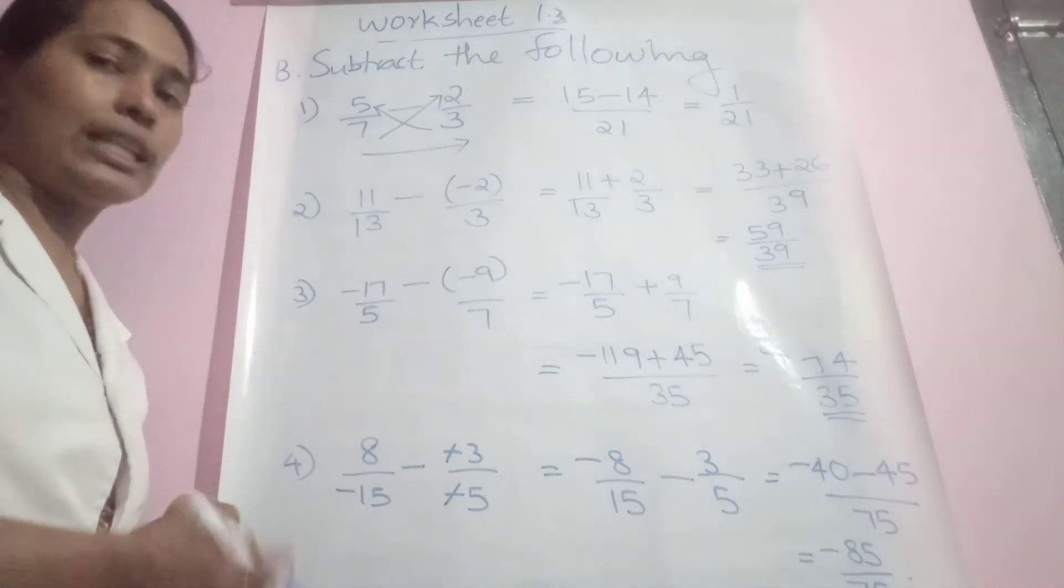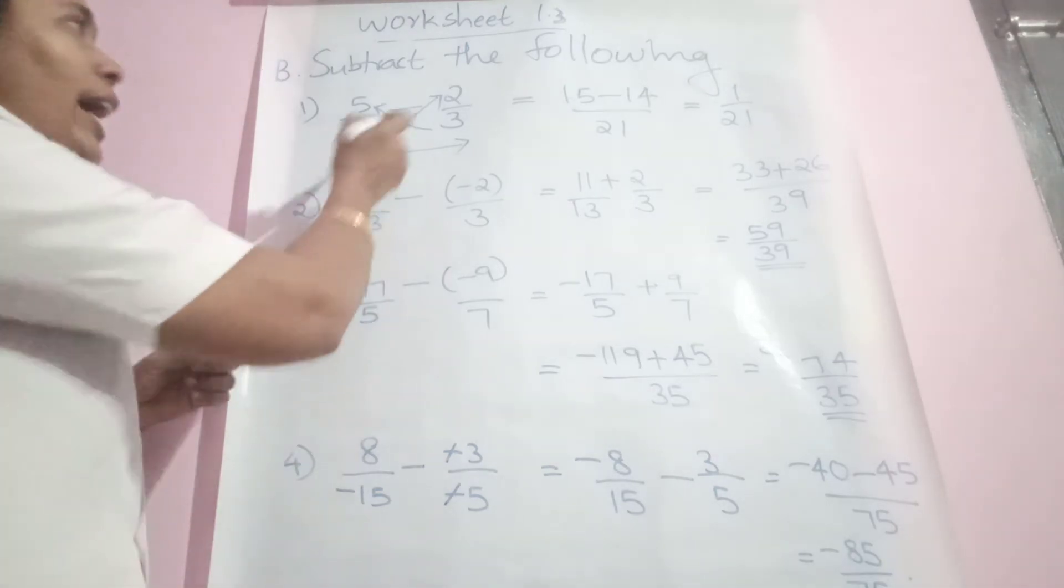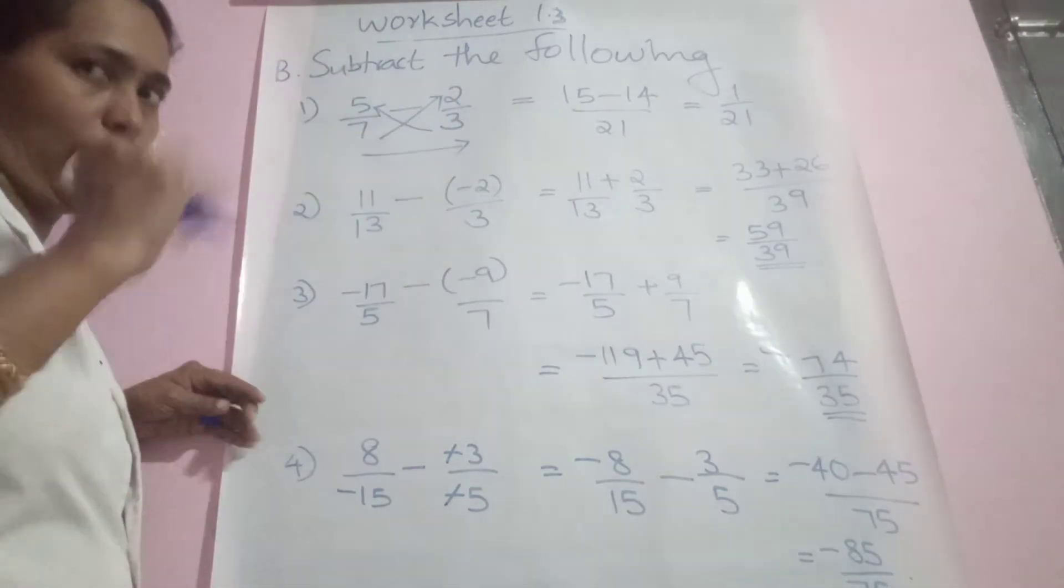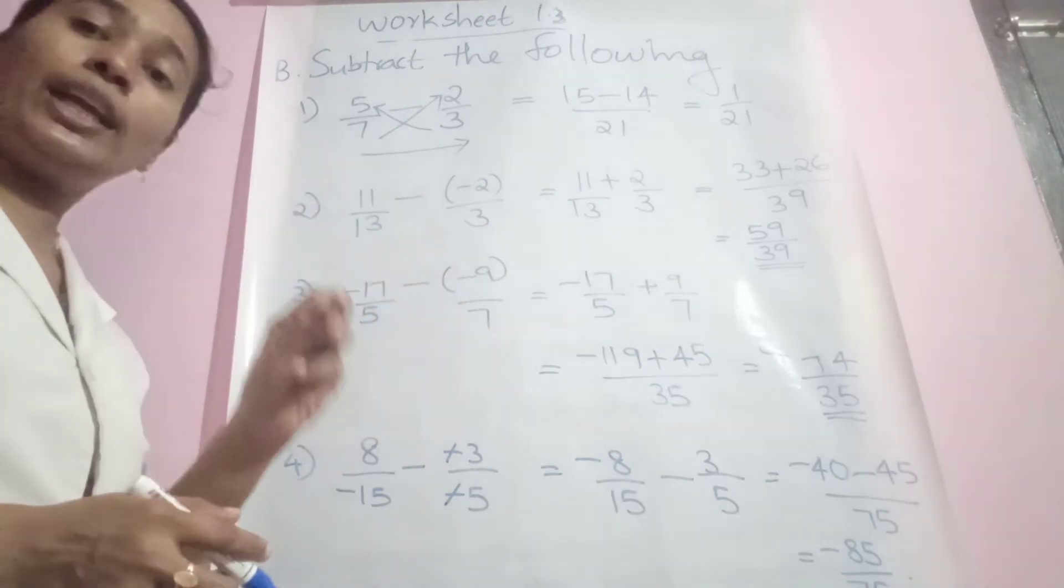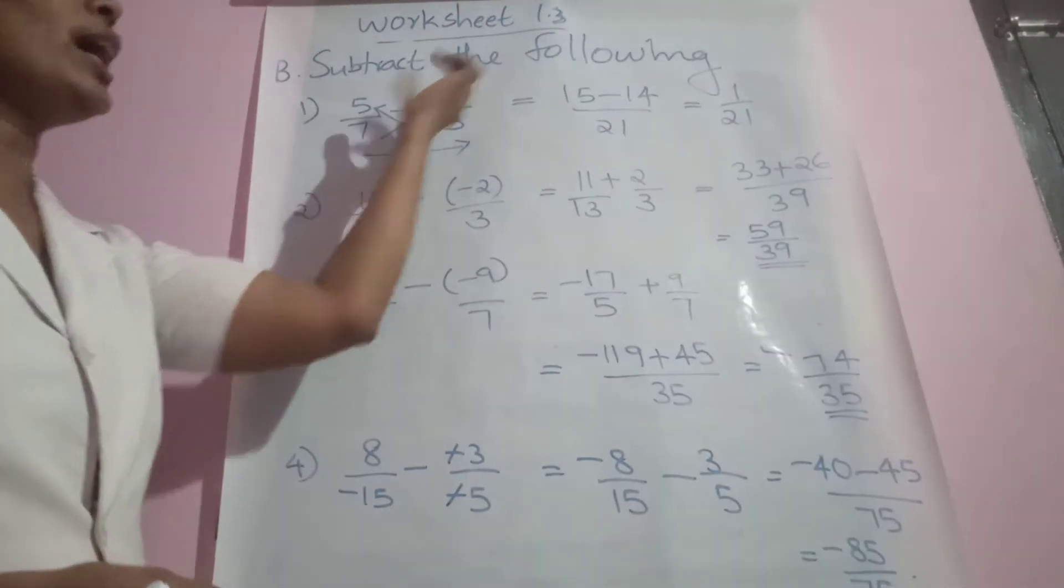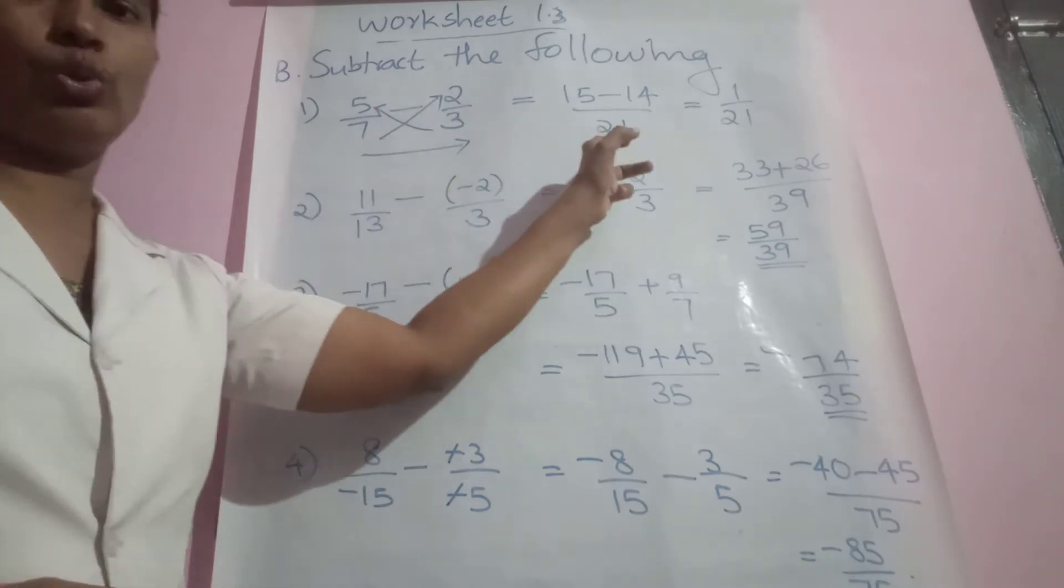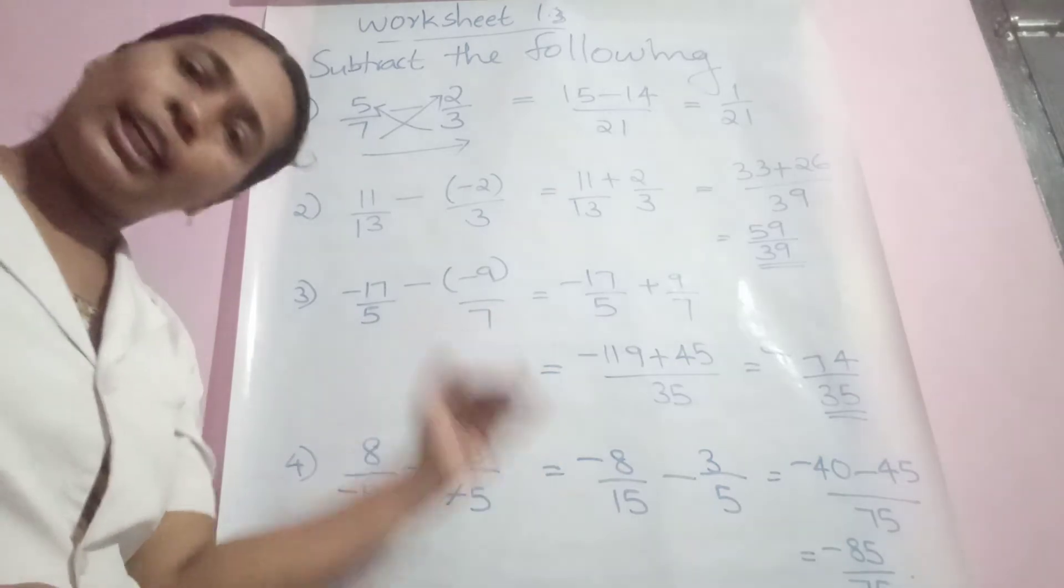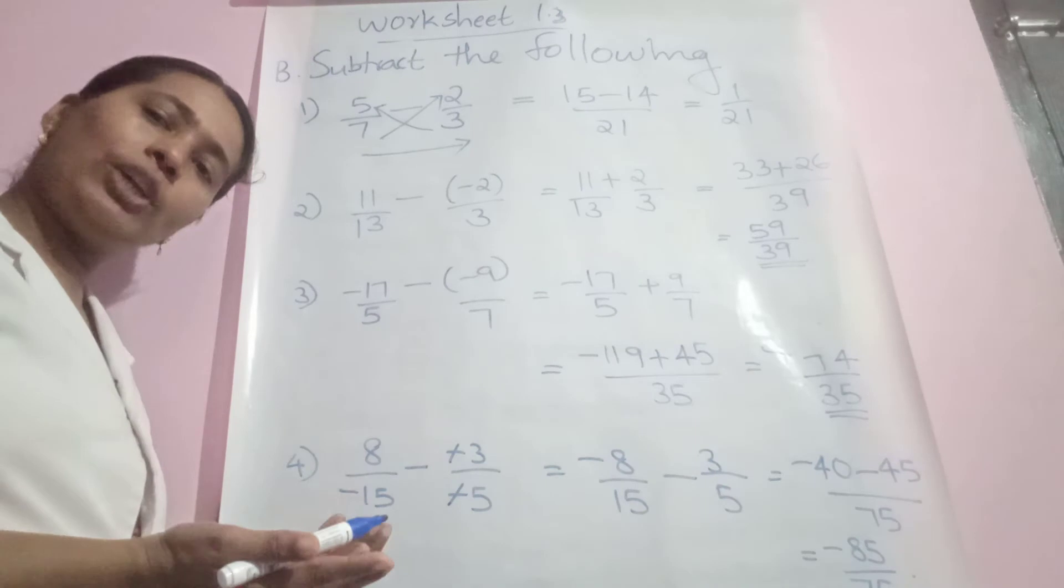Teacher is applying cross multiplication method. See the arrow mark: 3 to 5, 7 to 2, 3 to 7. Three arrow marks represent three products. 3 times 5 is 15, 7 times 2 is 14, then 7 times 3 is 21 which comes in the denominator. Now subtract 15 minus 14, which gives us 1/21. Finished.